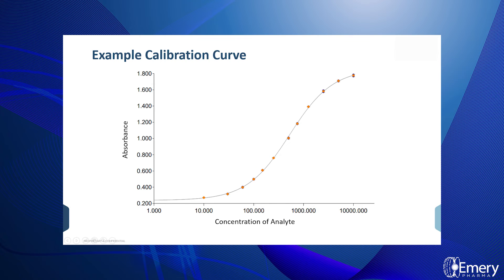Then finally, the measured signal of the samples is compared to the standard curve generated from the known concentrations of the target protein. This is an example of an ELISA calibration curve used to quantitate the unknown analytes present. It was generated using the absorbance of the standards with curve plotting software.